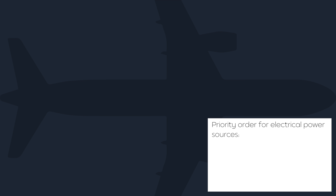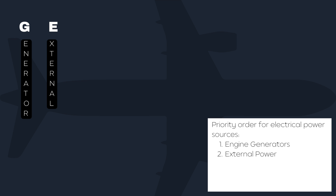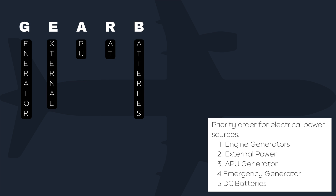When there is more than one power source available, the power source chosen to supply electrical power depends on its priority. The engine-driven generators have priority over the APU generator and over external power. External power has priority over the APU generator when the external power push button switch is selected on. The APU has priority over the emergency generator and the batteries. The emergency generator and batteries have the lowest priority. To memorize the order, the acronym GEAR-B can be used.